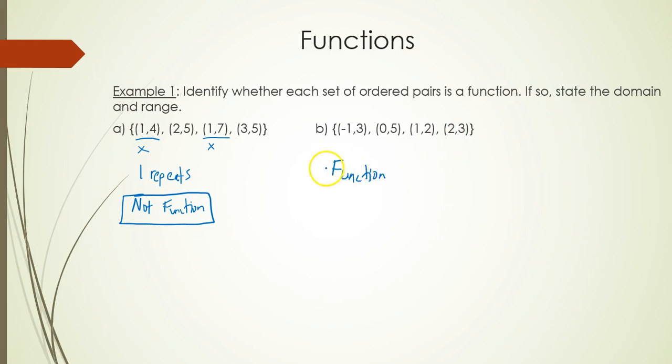Since it is a function, we are going to state the domain and we will state the range. Since there are only four points, we will just list the four x values from the points as the domain. Remember the domain would include x values only. And then the range, or the y values, you have 3, 5, 2, and then 3 again.